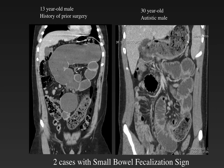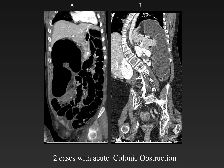Here are two additional cases with the small bowel fecalization sign. The 13-year-old male with prior surgery shows a fecalized distal loop of bowel due to adhesions. However, the 30-year-old autistic patient also has a similar appearance of fecalized distal bowel, but this results from an obstructing trichobezoar in the distal bowel. So fecalization is a sensitive sign, but not specific.